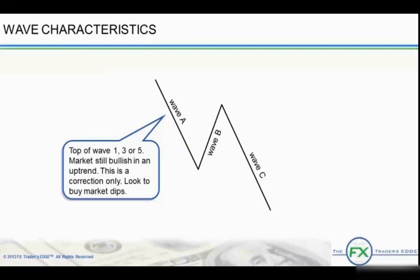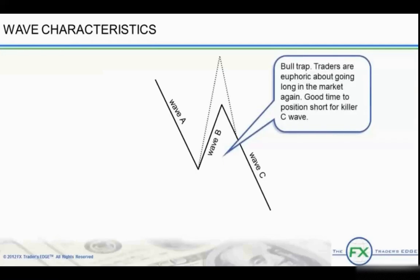If A travels in five waves, the correction is likely to go deep as a zigzag move. If A travels in three waves, then the correction is likely to be a flat correction or a triangle. Wave Bs are usually bull traps and sucker plays. After an A wave, especially if it is three waves, the market looks to re-buy the uptrend, not recognizing that the correction isn't over yet. The market gets very euphoric about the continuation of the trend, and the move up is actually quite weak and corrective, a big disappointment.